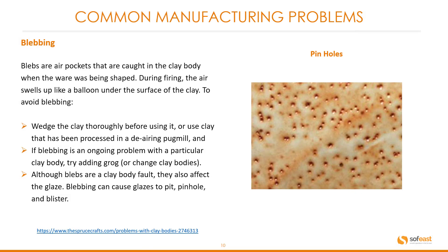Blebbing: blebs are air pockets that are caught in the clay body when the ware was being shaped. During firing, the air swells up like a balloon under the surface of the clay. To avoid blebbing, wedge the clay thoroughly before using it, or use clay that has been processed in a de-airing pug mill. If blebbing is an ongoing problem with a particular clay body, try adding grog, or change clay bodies. Although blebs are a clay body fault, they also affect the glaze — blebbing can cause glazes to pit, pinhole and blister.